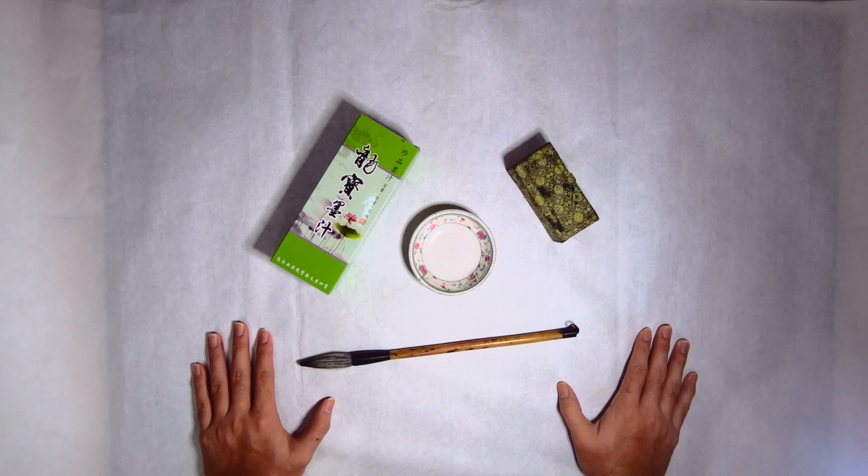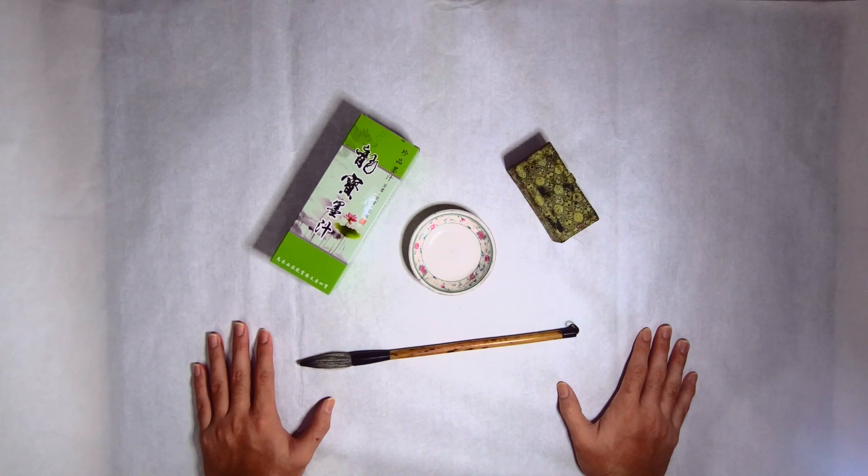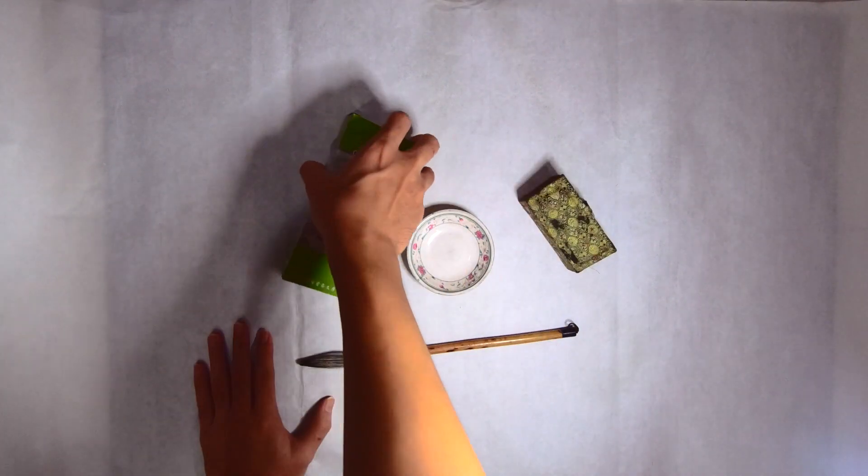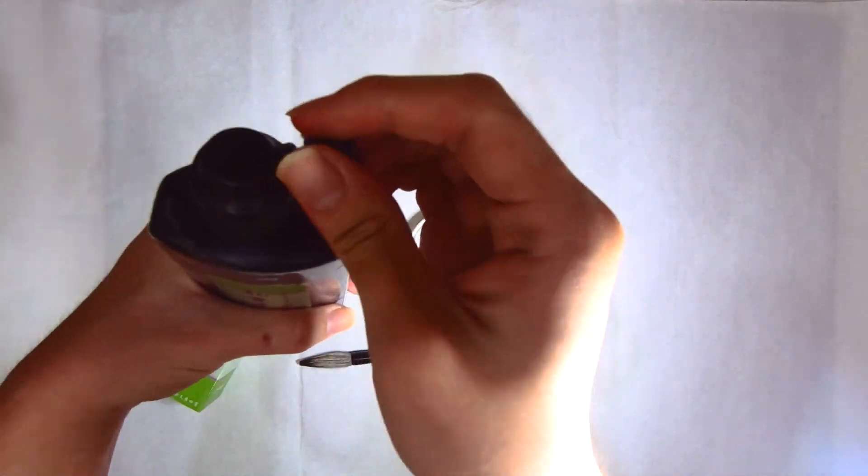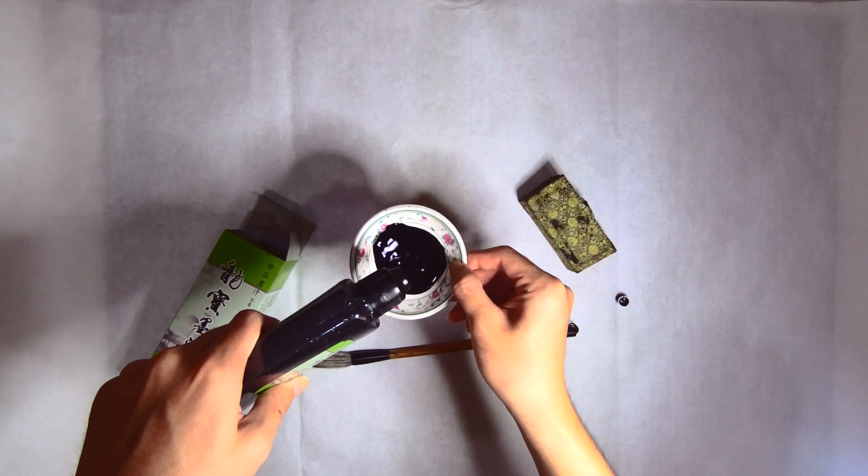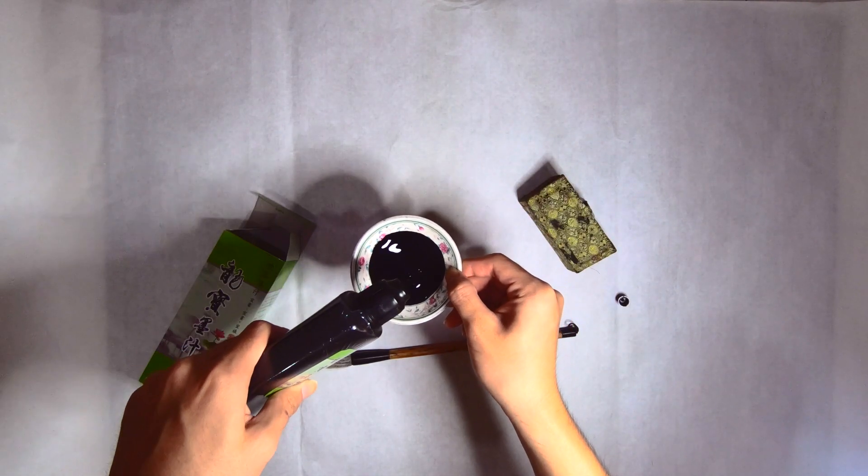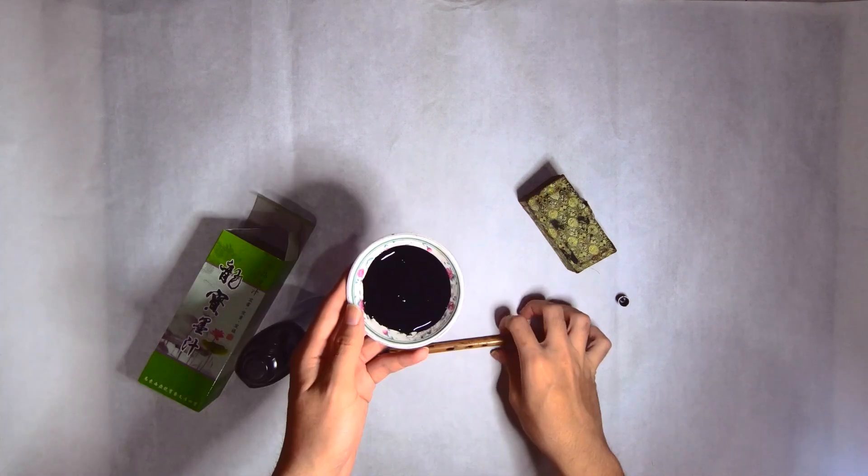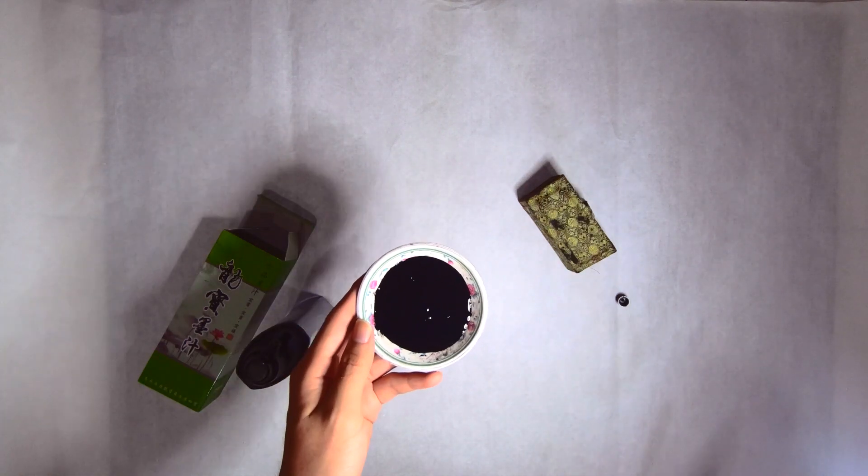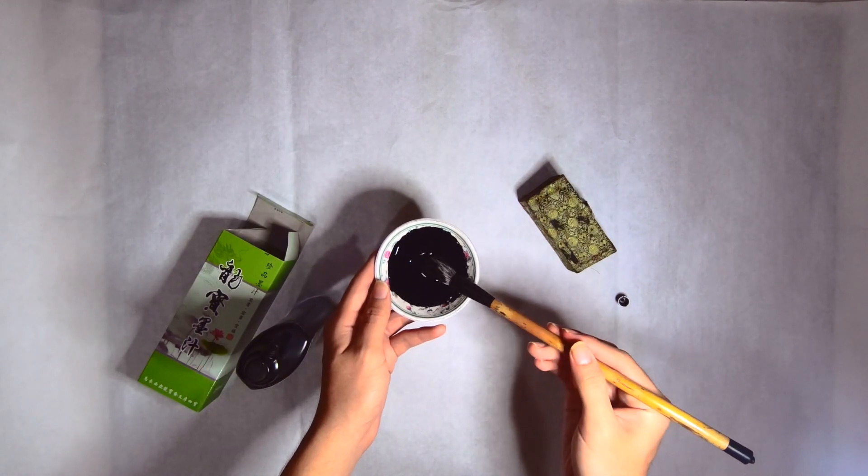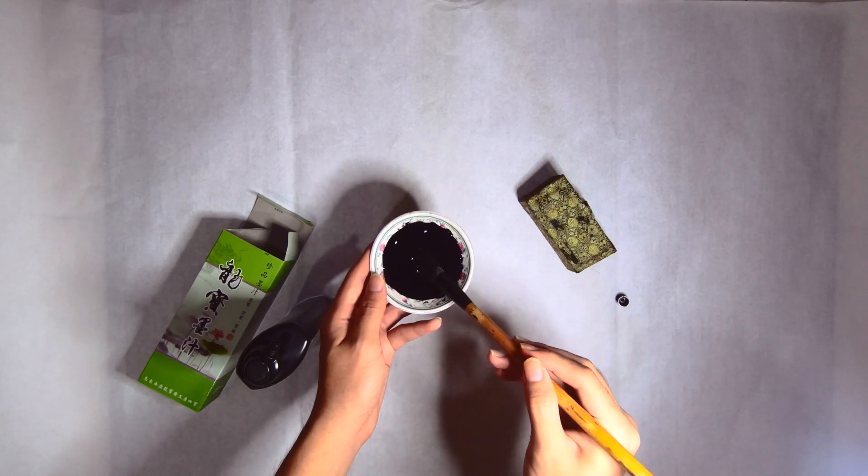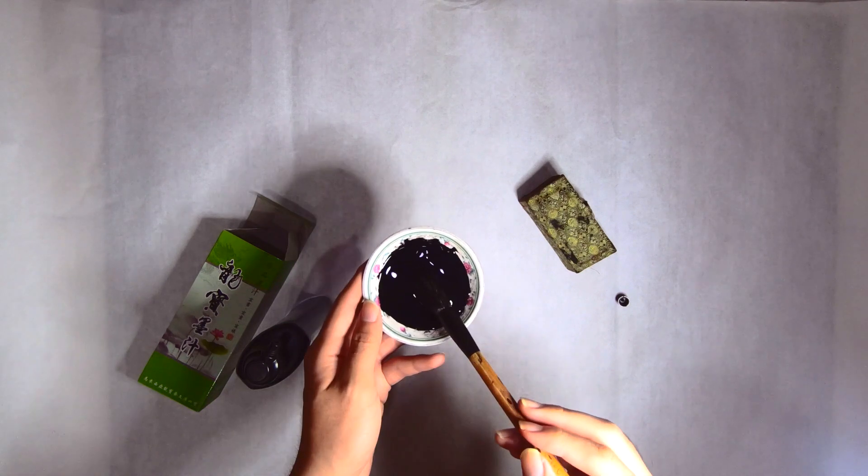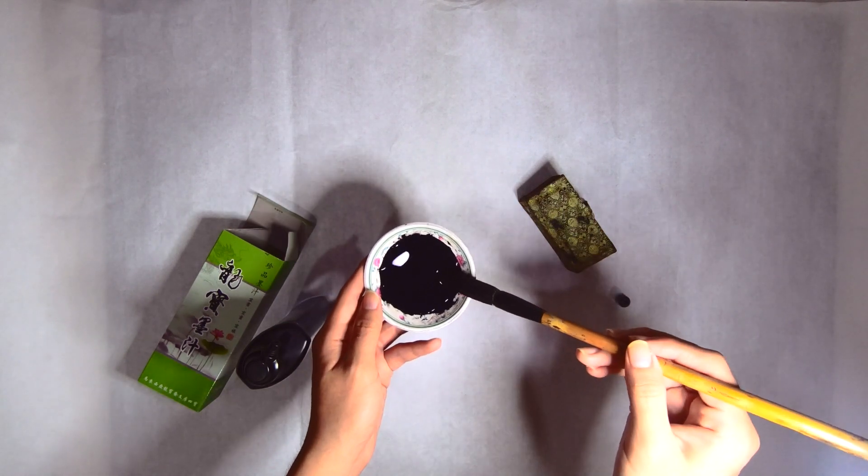Without further ado, let us start by preparing our stuff. Firstly, make sure you have your trusty ink. Uncap it and pour it into any saucer that you can find in your kitchen. Make sure the saucer is about three-quarters full. Next we can take our brush and gently, slowly dip it into the ink. Make sure it is fully wet.